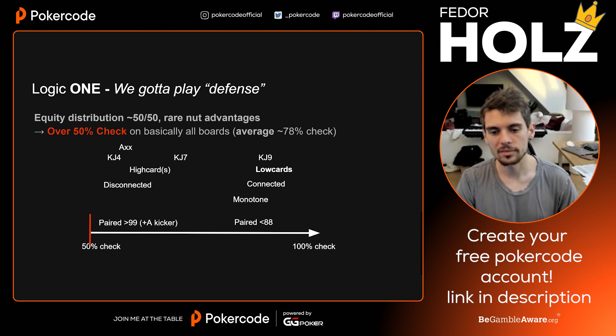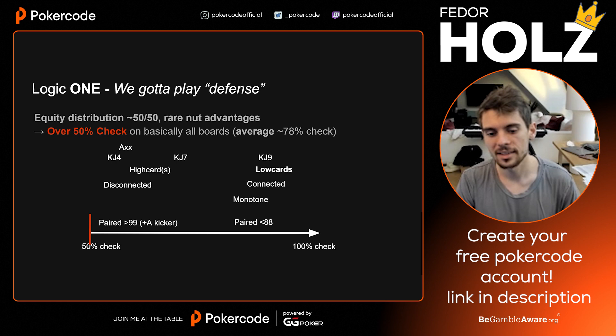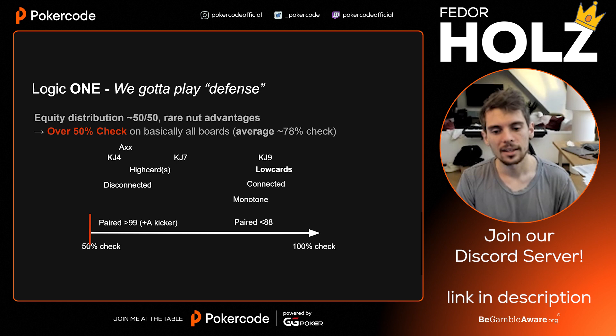One other logic I found was around paired boards. Paired boards higher than nines — so 99x — get bet more often. Paired boards below eights — so 88x — get checked more often. There's one exception: if the kicker is an ace, like 88A, then it gets bet more often.